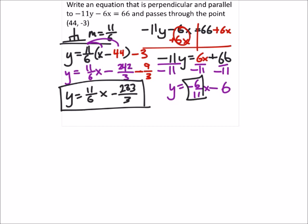So on this next one, we want an equation that's going to give us a parallel lines, which means the slope is going to be the same, the negative 6 11ths.